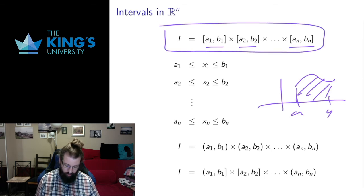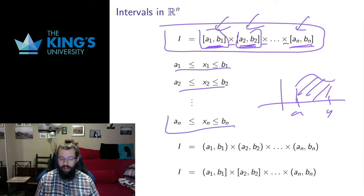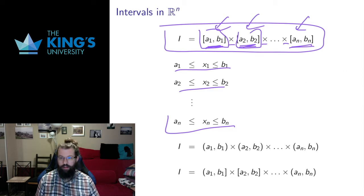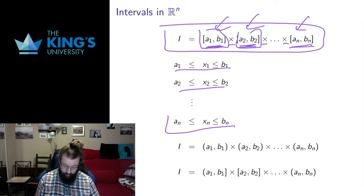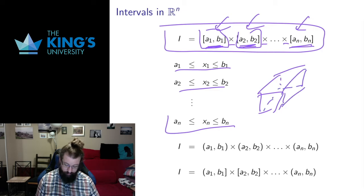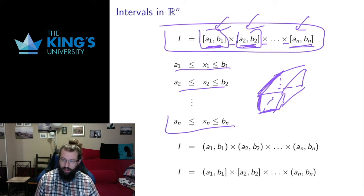With this notation, I have intervals with a geometric product — a times sign between them. This means the first variable is in one range, the second variable is in another range, and the last variable is in another range. The variables are allowed to go in those ranges independently. This gives me rectangles and rectangular prisms. An interval in R2 is a rectangle where the x coordinate goes from something to something and the y coordinate goes from something to something. An interval in R3 is a rectangular prism with separate ranges for x, y, and z. In higher dimensions it's the higher-dimensional analog. Each variable is independently bound between an upper and lower bound.